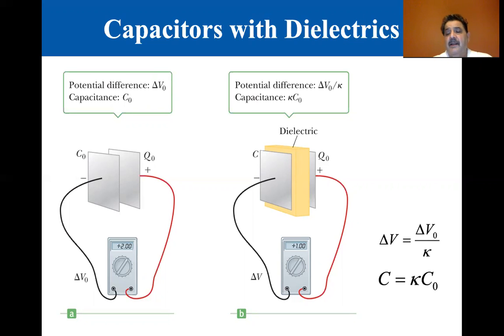So the capacitance is multiplied by kappa. So C is equal to kappa times C zero. So it increases the capacitance. So if we were to raise the voltage back to its original state to two volts, it would hold more charge. So dielectrics are a way of increasing the charge without having to increase the geometry, either the area or the separation distance between the plates.